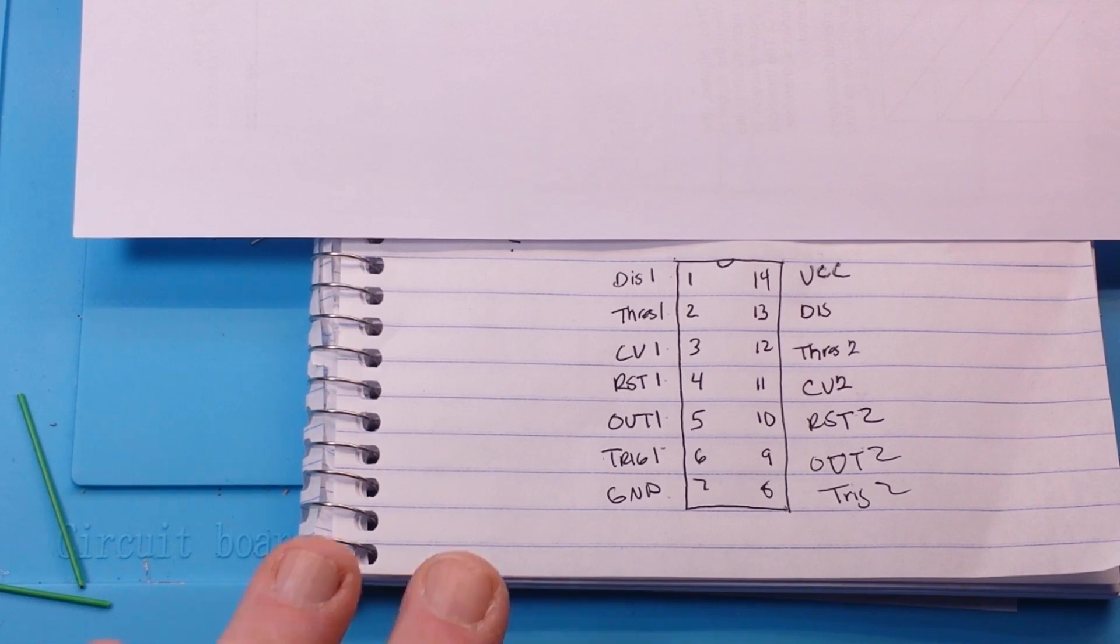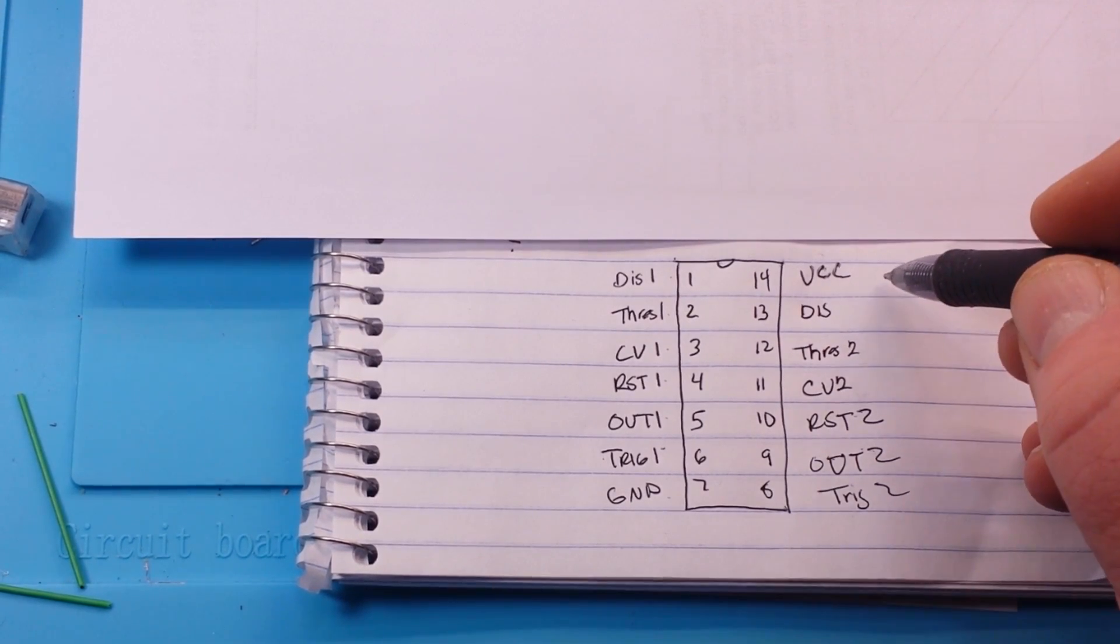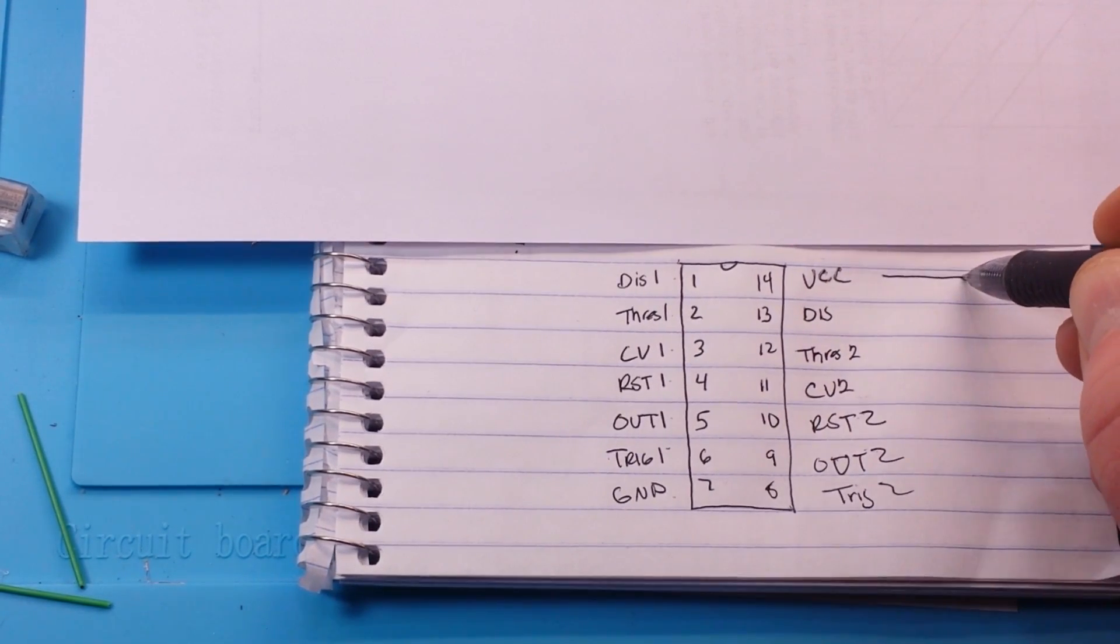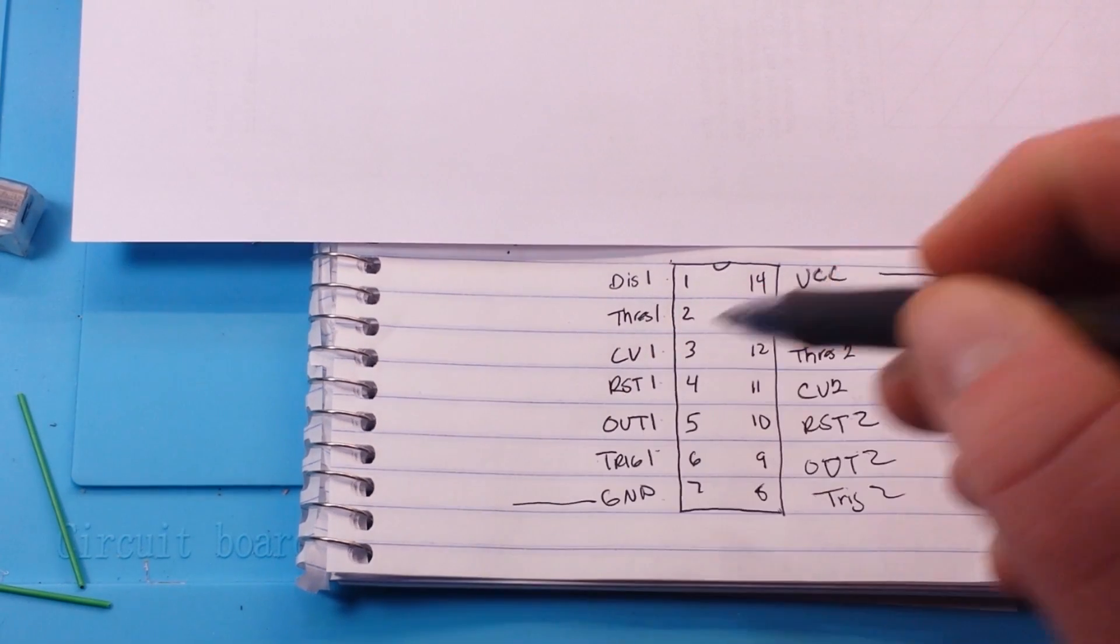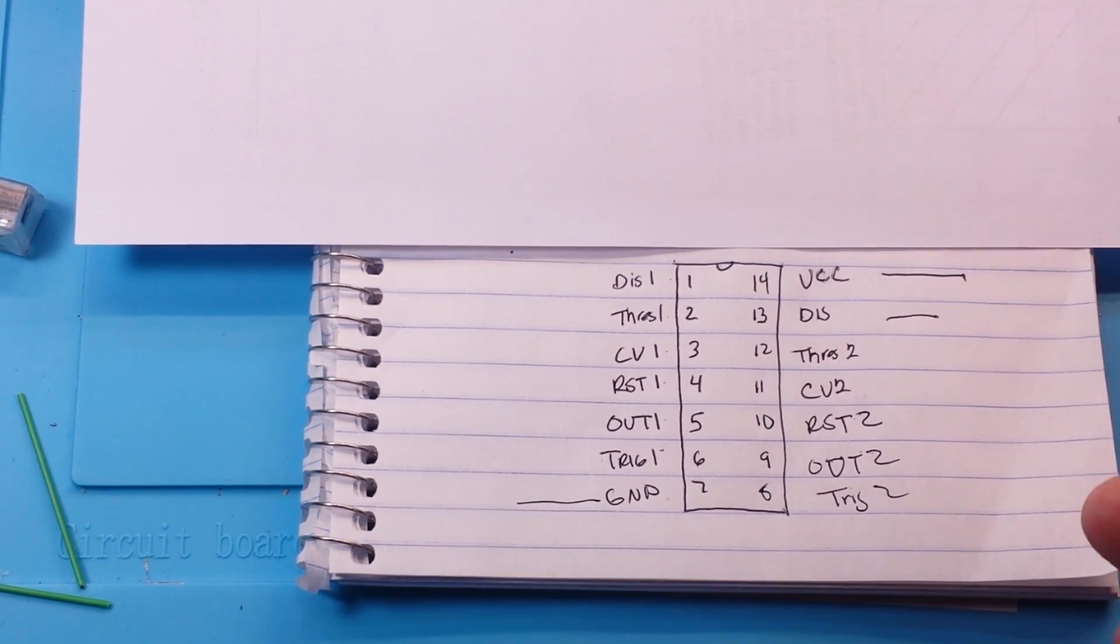Any circuit you can do with two 555s, you can do with one 556. What makes it easier is fewer wires. You've got one VCC, one ground, and discharge. So three wires for the chip to the rest of the circuit, as opposed to having six. It has some internal bypass, so you don't have to worry about the frequency of one timer affecting the frequency of the other timer.